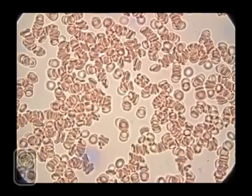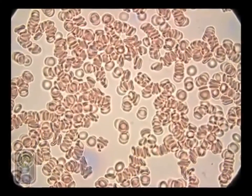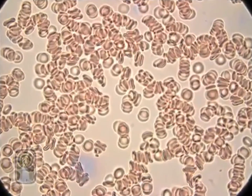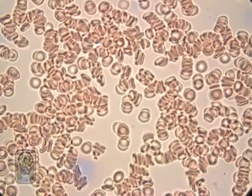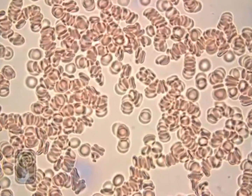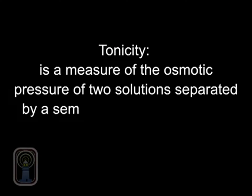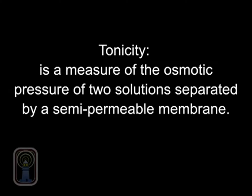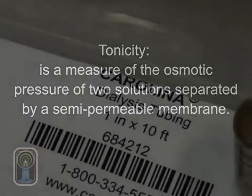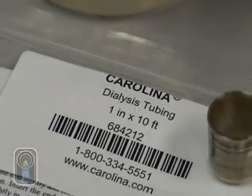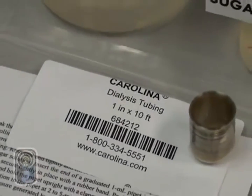Here we have red blood cells in solution. The red blood cell has a semipermeable membrane. Tonicity is the measure of the osmotic pressure of two solutions separated by a semipermeable membrane. It is commonly used when describing the response of cells immersed in an external solution.